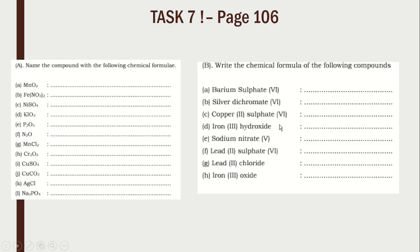Task 7: Refer to your module, page 106. You need to write the name given a formula, and also write the formula given a name. For transition elements like manganese and iron, be careful to check which oxidation number applies. Complete this task and send a photo to me right after the class.